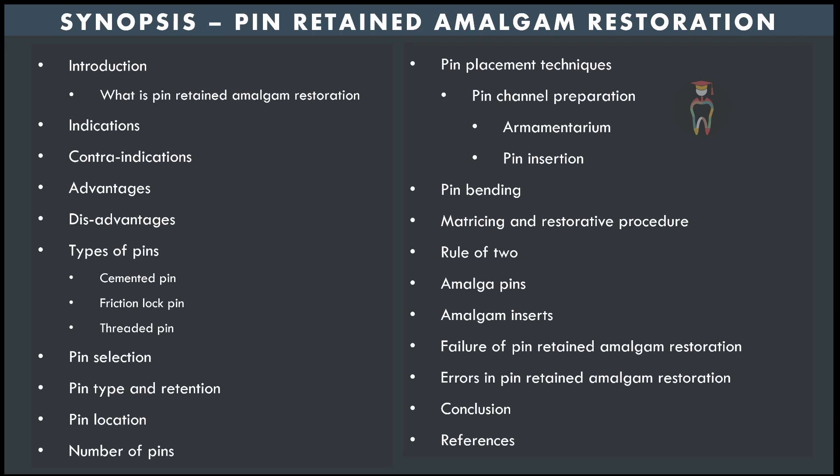Students should also cover: pin locations to avoid for each tooth; number of pins — one per missing transition line angle; pin placement technique including armamentarium and insertion methods for each pin type; pin bending using the TMS bending tool; matricing using a compound-supported matrix; the rule of two; amalgam pins and amalgam insert as modifications; failure locations and errors such as drill or pin fracture, loose pins, and perforation into the pulp chamber or to the external tooth surface — supragingival or subgingival — followed by a conclusion and references.